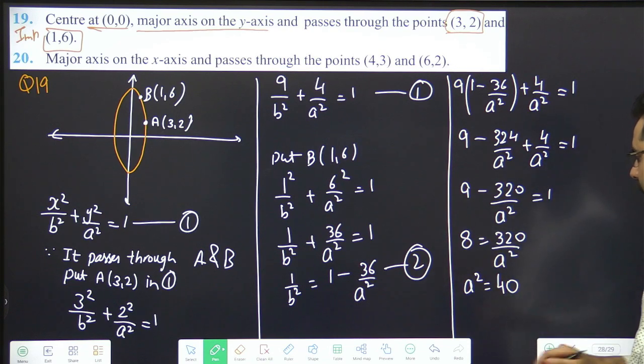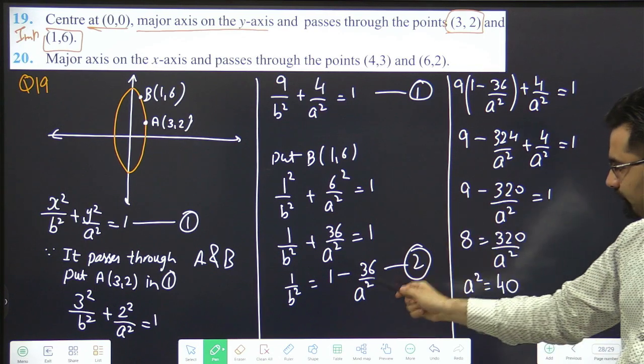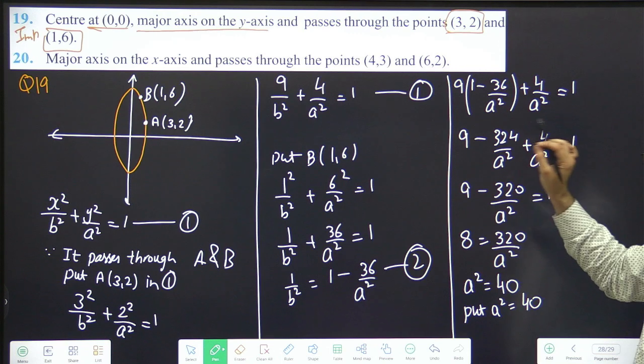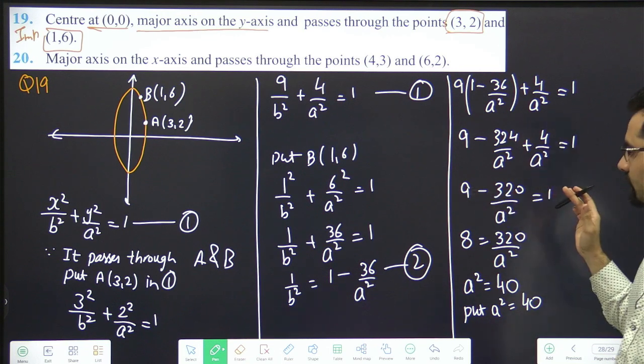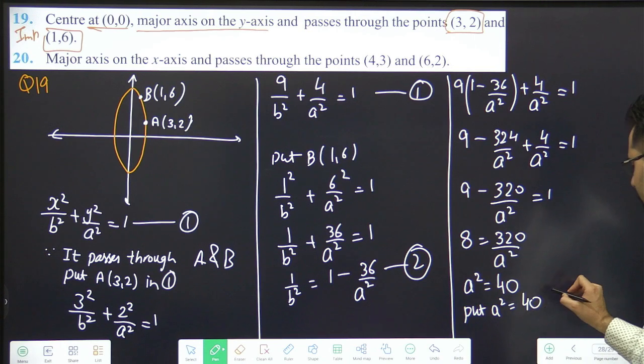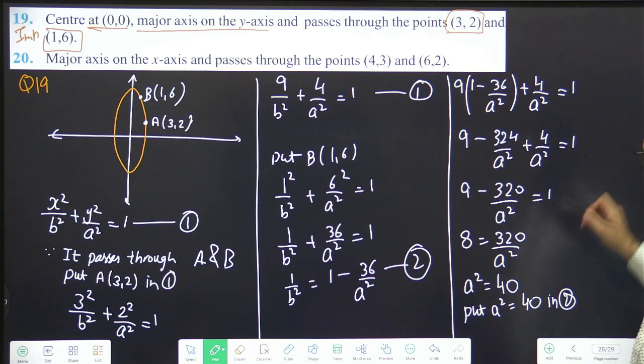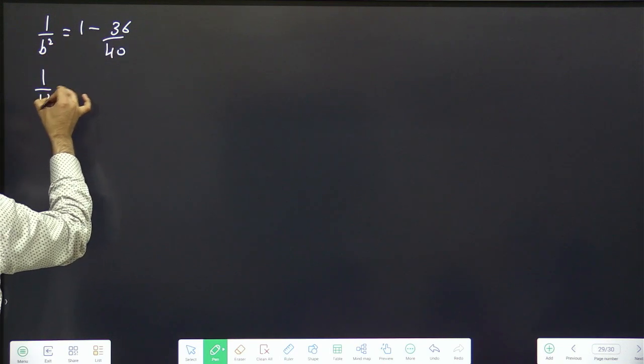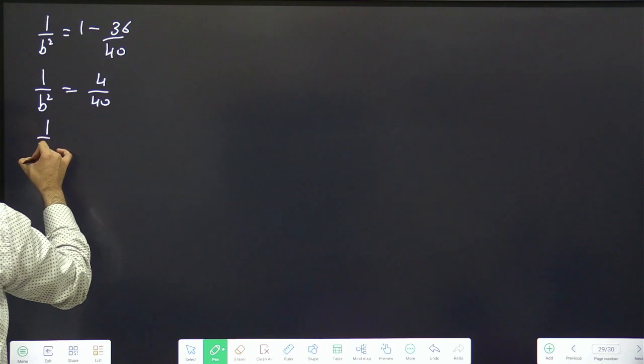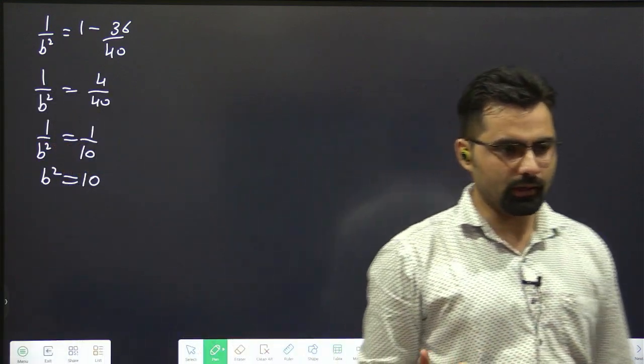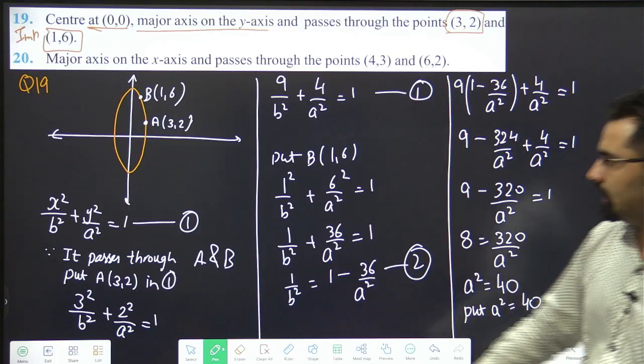Now put a square equals 40. 1 by b square, 1 minus 36 by 40. 1 by b square equals 4 by 40. 1 by b square equals 1 by 10. So b square equals 10. You will think why b square in place of a square? What is our equation? Basically x square by b square plus y square by a square equals 1.